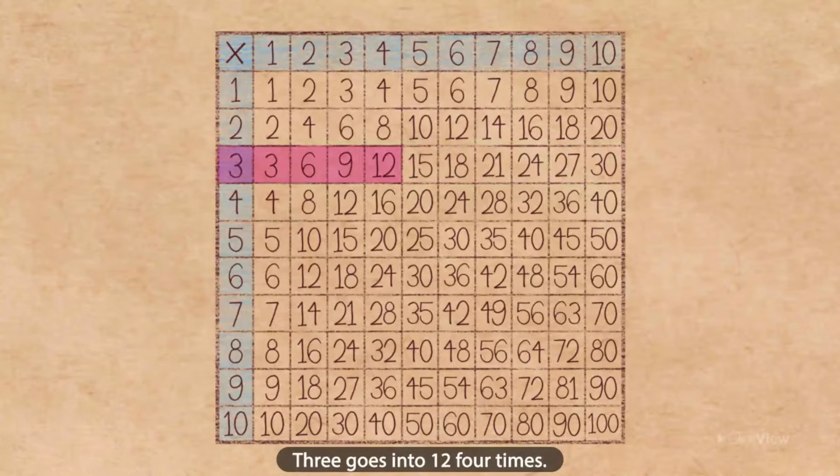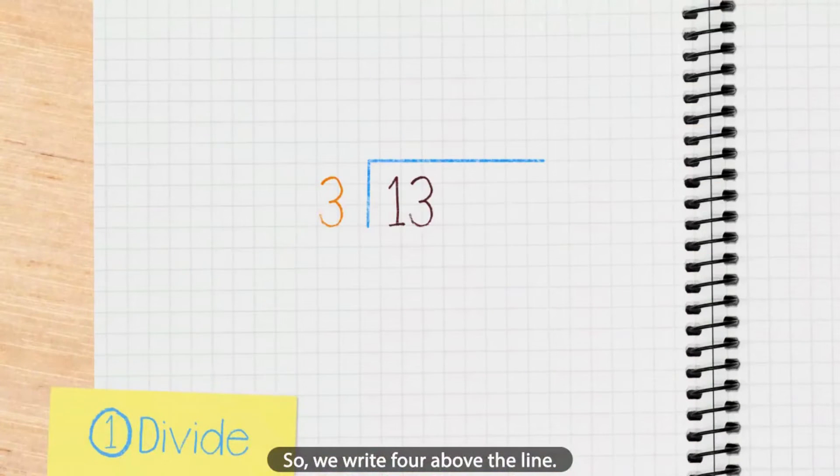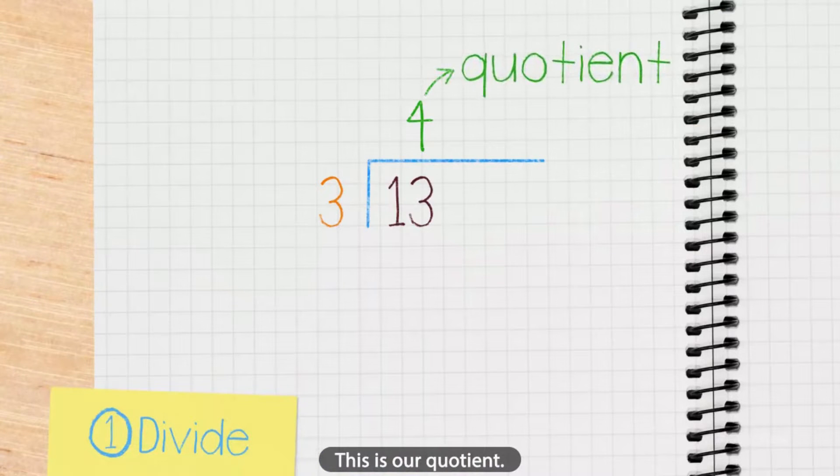3 goes into 12 four times. So we write 4 above the line. This is our quotient.